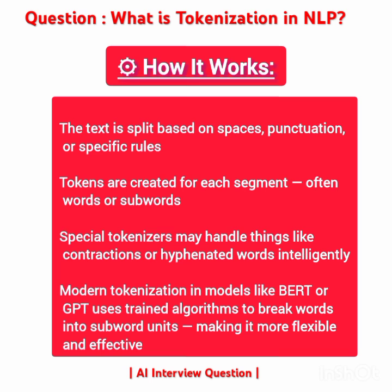How does it work? Text is split using spaces, punctuation, or rule-based logic. Tokens are often words or subwords. Some tokenizers handle edge cases like contractions or hyphenated words intelligently.